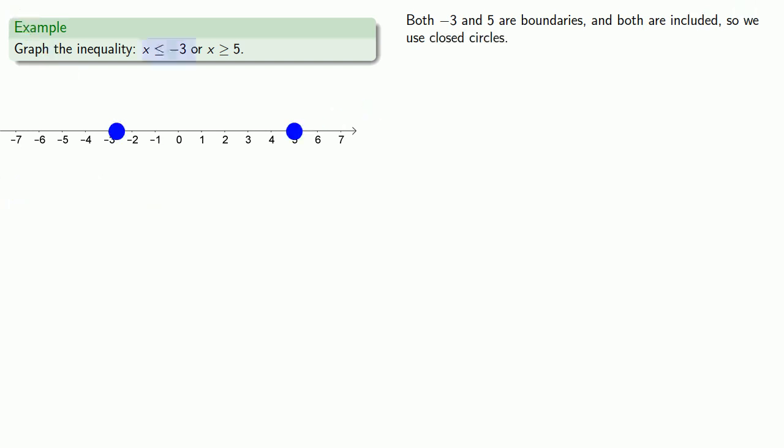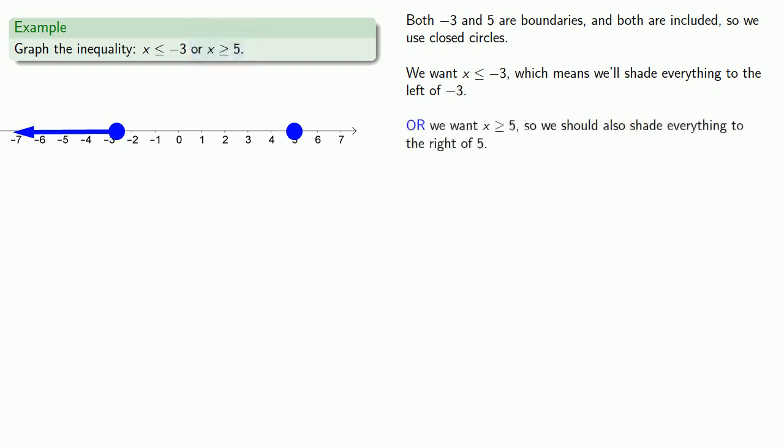We want x less than or equal to negative 3, which means we'll shade everything to the left of negative 3. Or we want x greater than or equal to 5, so we should also shade everything to the right of 5.